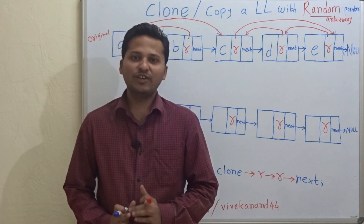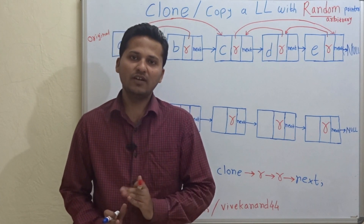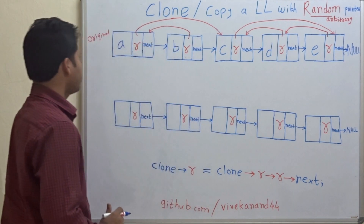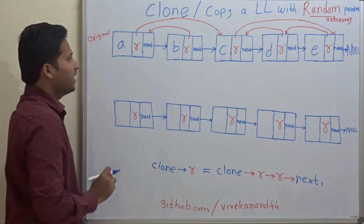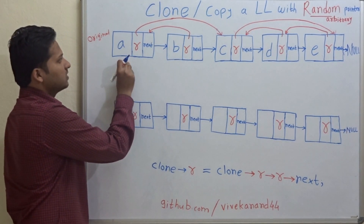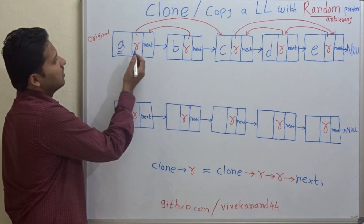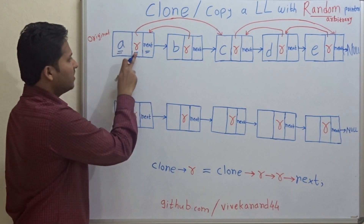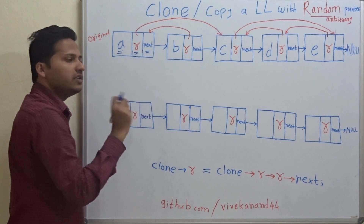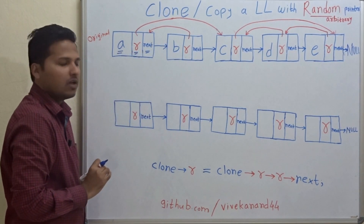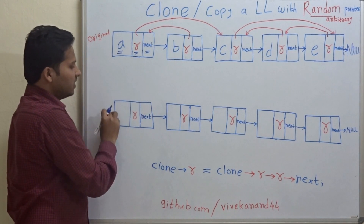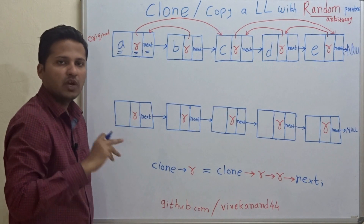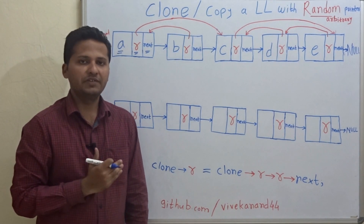Hello friends, today we are going to see how to clone a linked list with random pointers. This is the original linked list and every node contains data, a random pointer, and a next pointer. This random pointer can point to any node in the linked list. If you want to duplicate or copy this linked list, how do we manipulate and replicate the pointers?